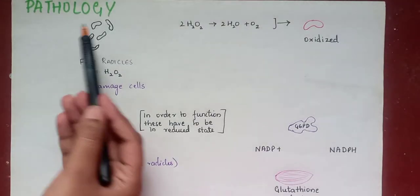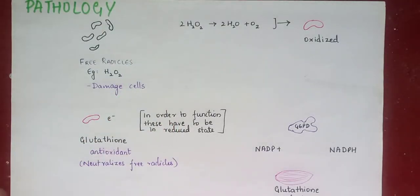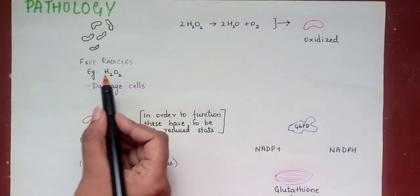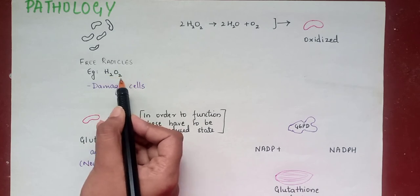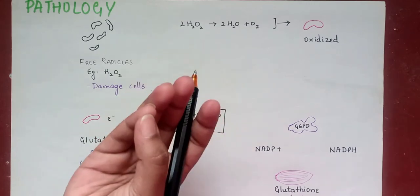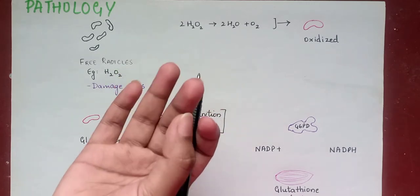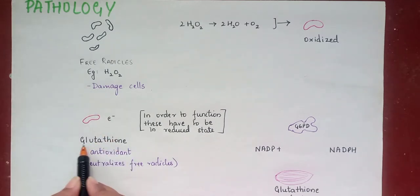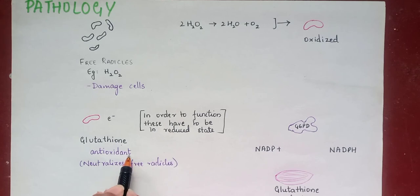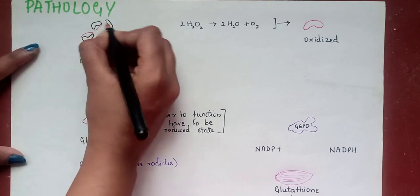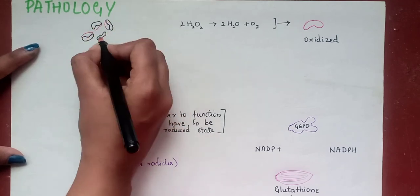Now let's understand the pathology. Normally we see free radicals — for example hydrogen peroxide or H2O2 — in our body. These free radicals damage cells by destructing the DNA, proteins, and cell membranes. There is a molecule called glutathione, which is an antioxidant, and it neutralizes these free radicals by binding with them.